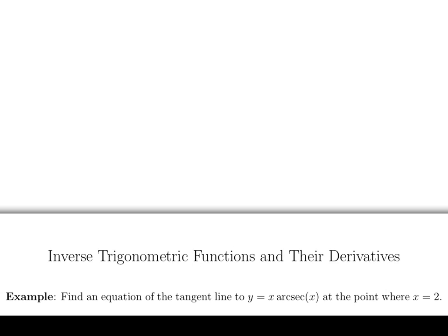So remember, the two things that we need in order to write down an equation of a tangent line are a point and a slope. We have part of the point, given that x is equal to 2, so now let's plug in 2 to get the y-value.